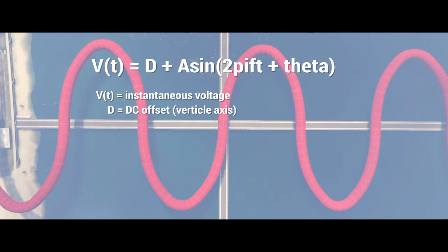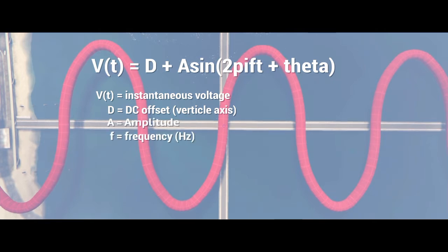D is the DC offset of the sine curve, A is the amplitude, F is the frequency, T is the time, and theta is the phase shift.